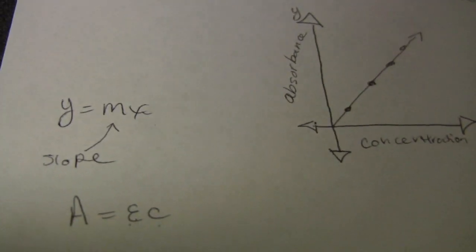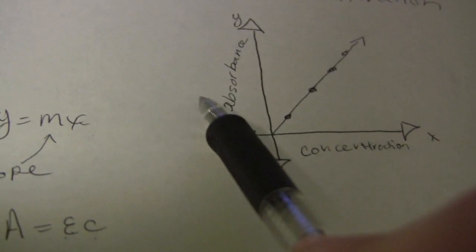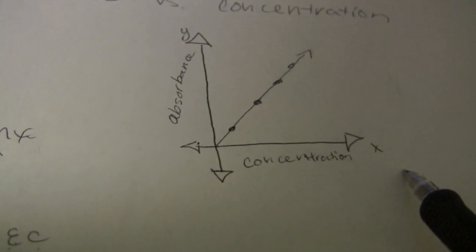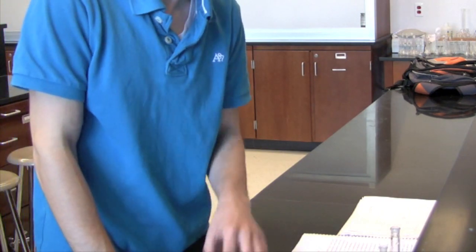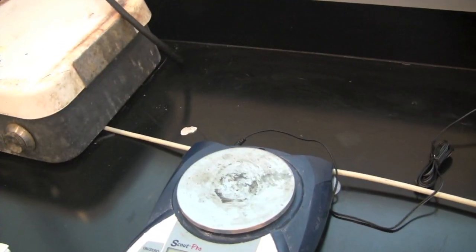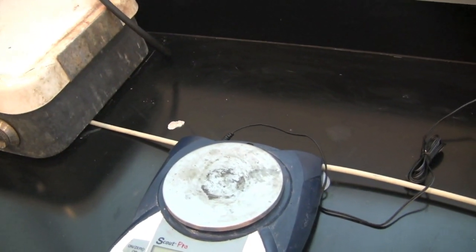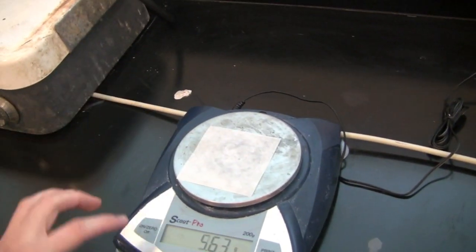So in order to find the molar extinction coefficient, we need to find the absorbance values for different concentrations. Solutions with different concentrations will be made from a stock solution. In order to make this stock solution, we will start by massing out 0.1 to 0.12 grams of the red crystals.